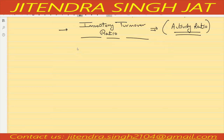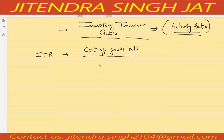The formula of inventory turnover ratio: inventory means stock — goods which we have in store. The formula of ITR (Inventory Turnover Ratio) is Cost of Goods Sold divided by Average Inventory.